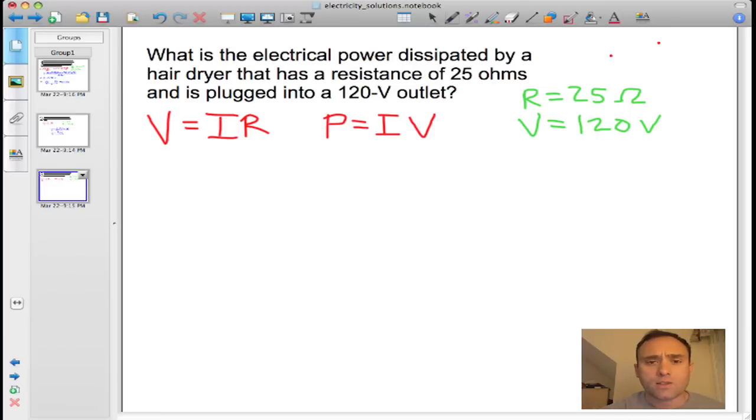So given this information, in order to solve for the power, we need to first find out what the current is flowing through this system. So in order to do that, we're going to use Ohm's Law first. We can rearrange this algebraically to solve for I, and I is equal to V divided by R.